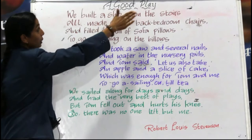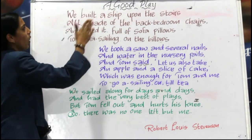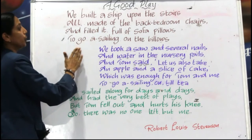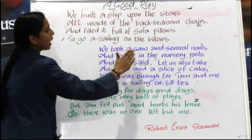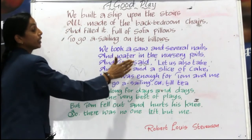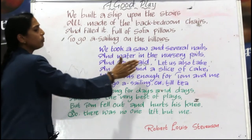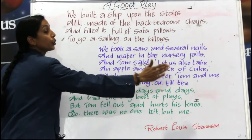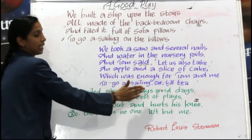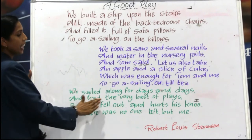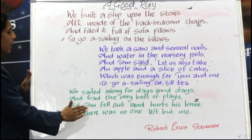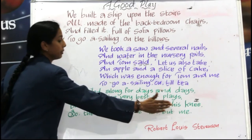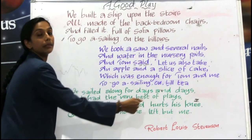Now listen to me carefully. 'A Good Play.' We built a ship upon the stairs, all made of the back bedroom chairs, and filled it full of sofa pillows to go sailing on the billows. We took a saw and several nails and water in the nursery pails, and Tom said, let us also take an apple and a slice of cake, which was enough for Tom and me to go a-sailing on till tea. We sailed along for days and days and had the very best of place, but Tom fell out and hurt his knee, so there was no one left but me.